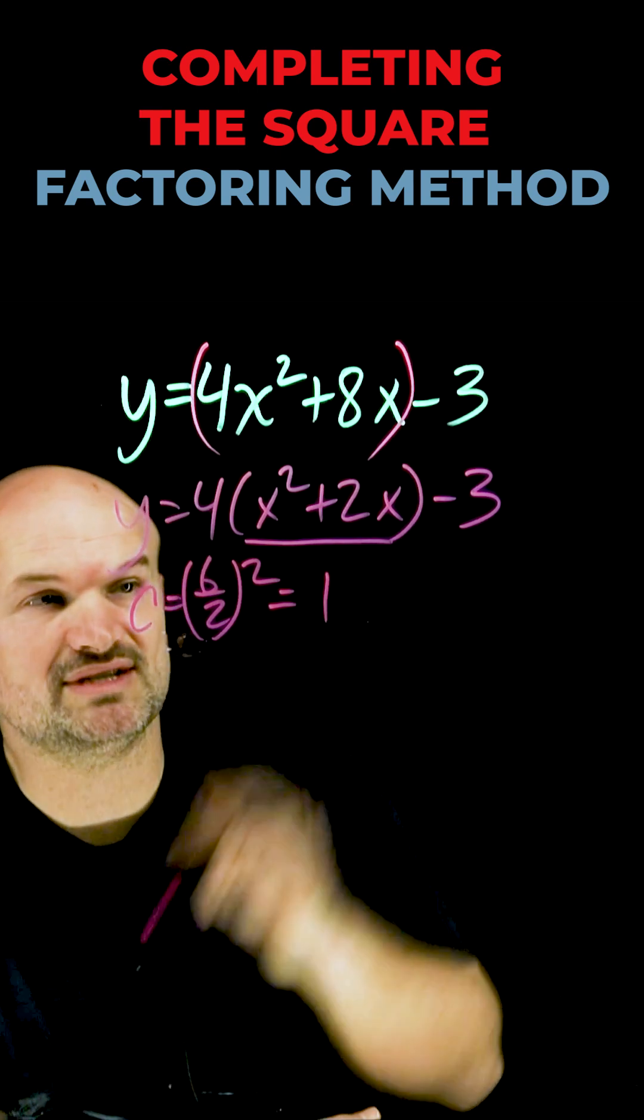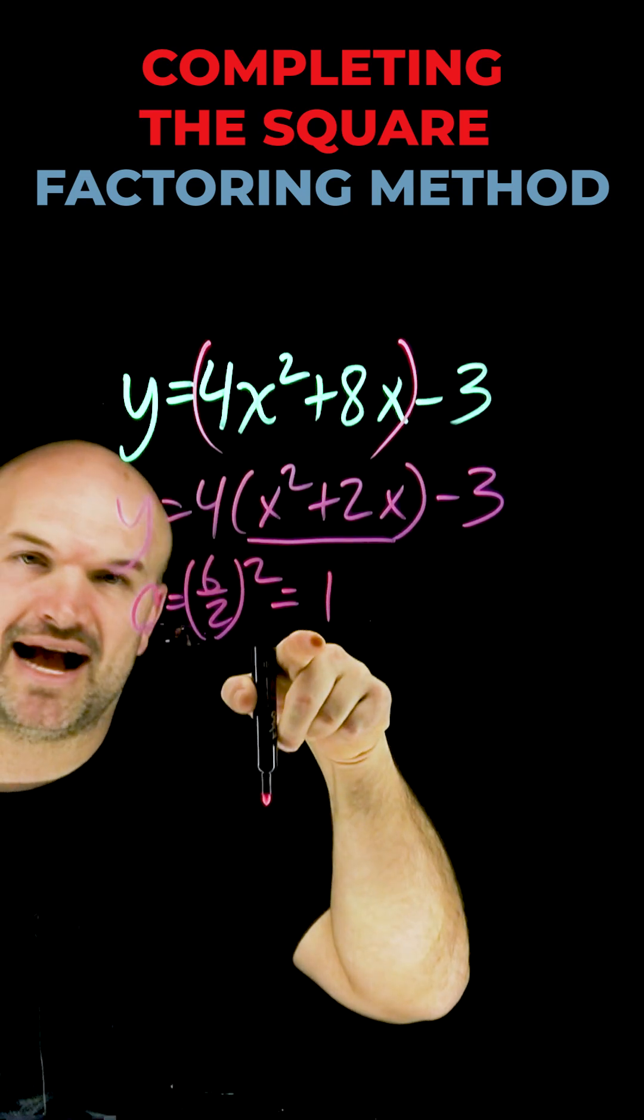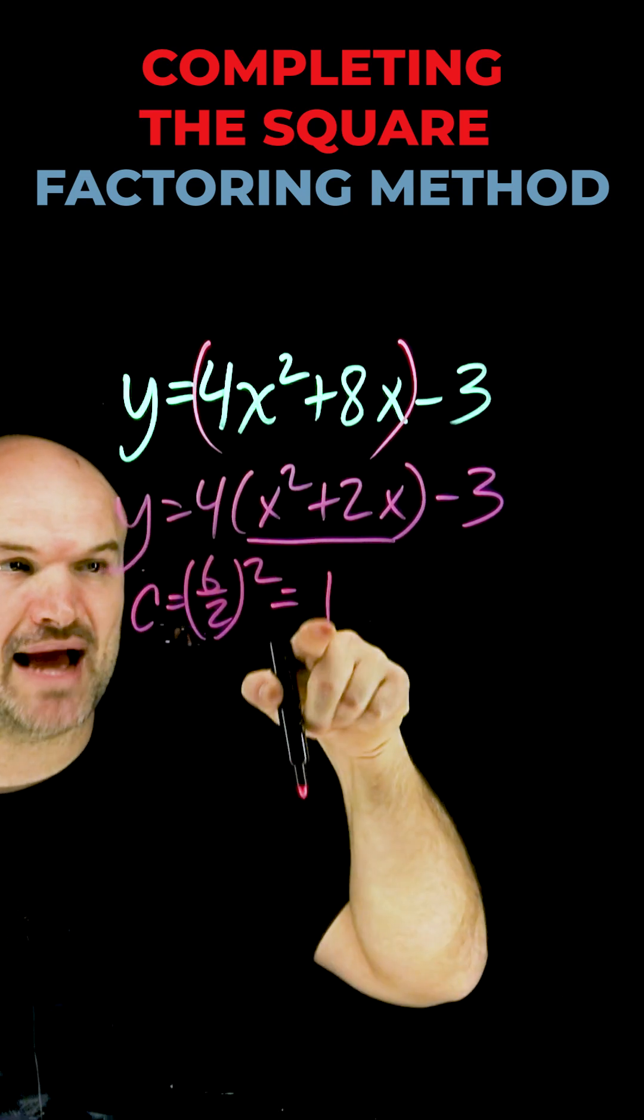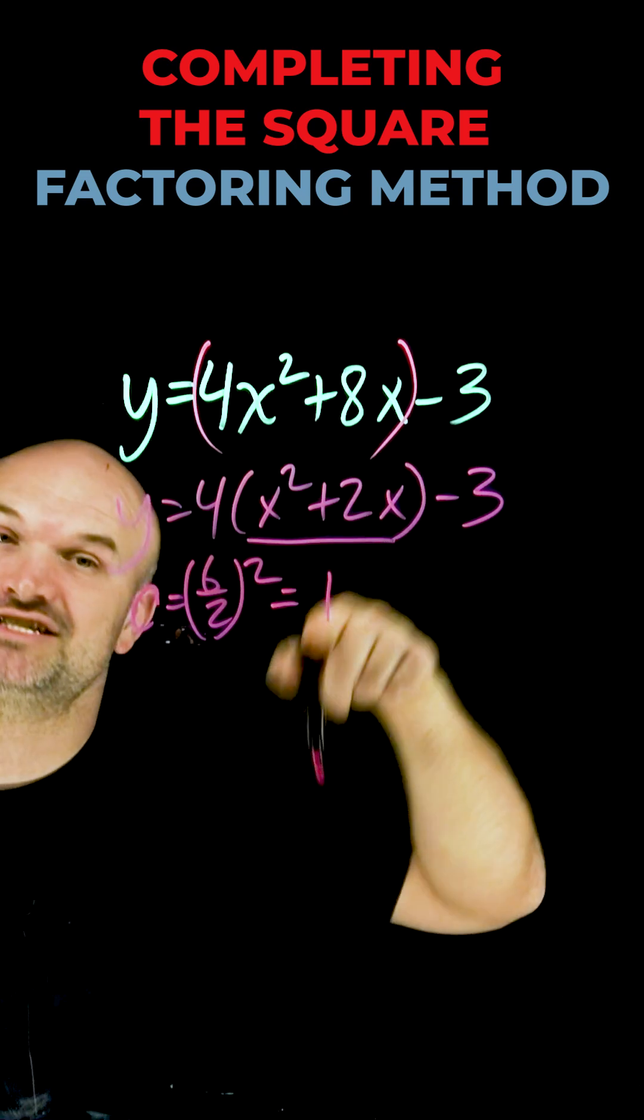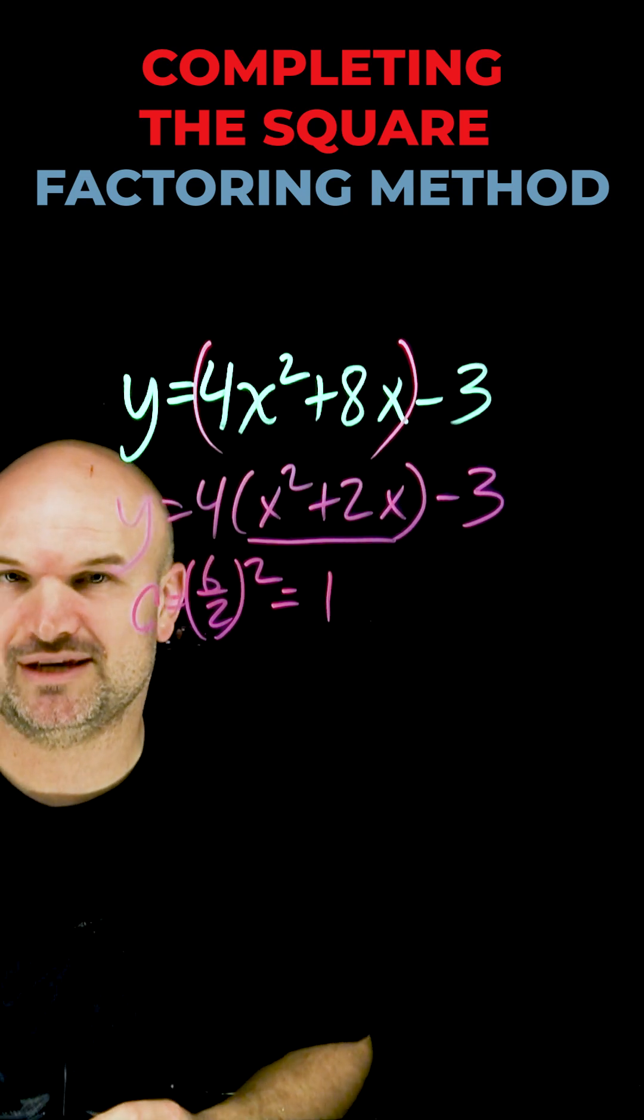Now what's really important is I'm going to add this 1 inside the parentheses, but to keep this equation equivalent, I can't just add a 1 inside the parentheses. I have to add the 1 inside the parentheses as well as subtract the 1 outside. As long as I add and subtract on the same side, the equation is still going to be equivalent.